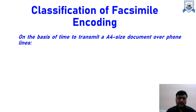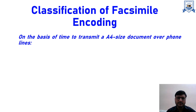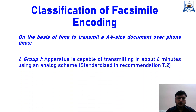Now if we talk about the classification of facsimile encoding, the classification is based on how much time is required to transmit an A4 size document over the phone line. On the basis of that, we have divided this into 4 groups: mainly Group 1, Group 2, Group 3, and Group 4.